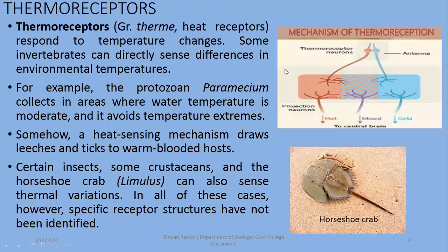Last we discuss thermoreceptors. Thermoreceptors are responsible for the detection of temperature changes. Some invertebrates can directly sense differences in environmental temperatures. For example, the protozoan collects in areas where water temperature is moderate and avoids temperature extremes. Also, a heat-sensing mechanism draws leeches and ticks to warm-blooded hosts — temperature detection guides them toward their host.